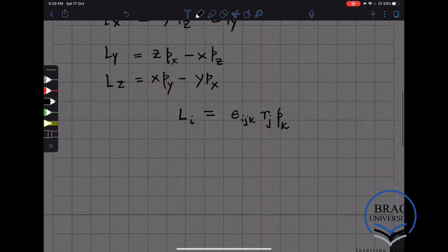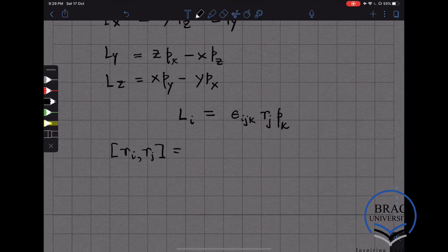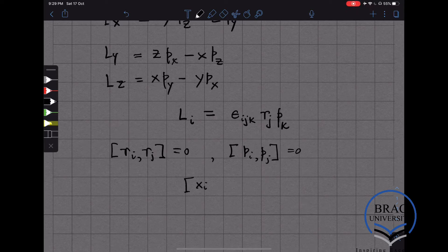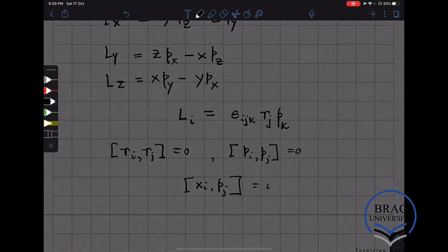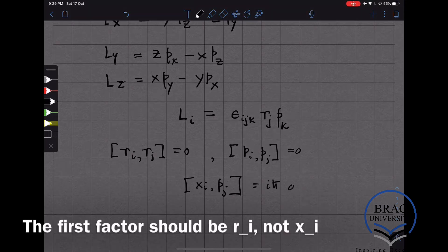Now we can use the fundamental commutation relationship. All the position variables in quantum mechanics commute, and the momentum variables commute, but when we take xi and pj, we get i h bar delta_ij.